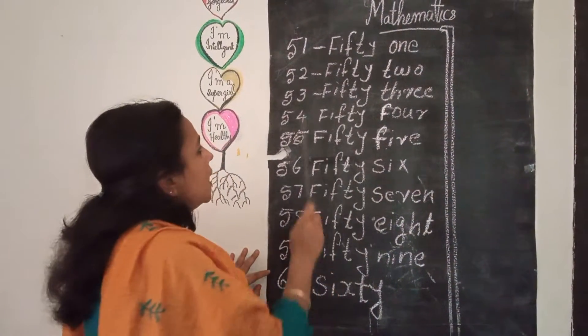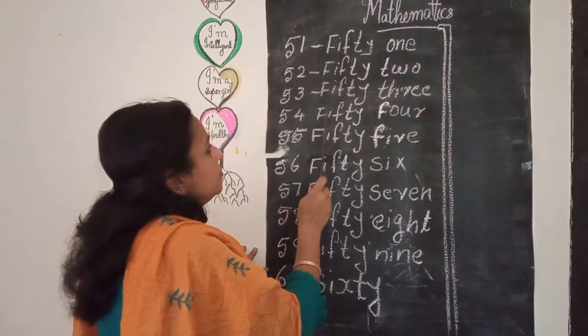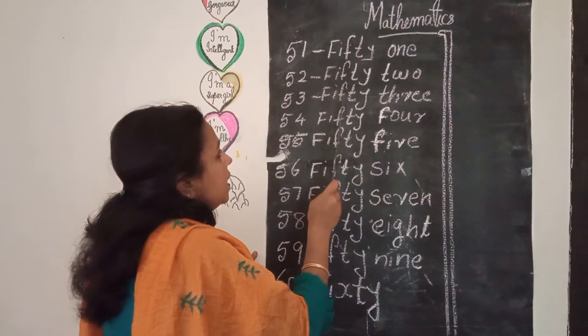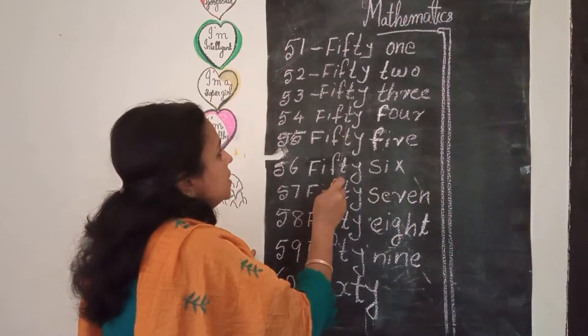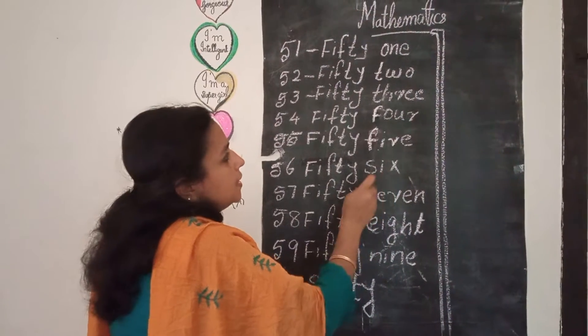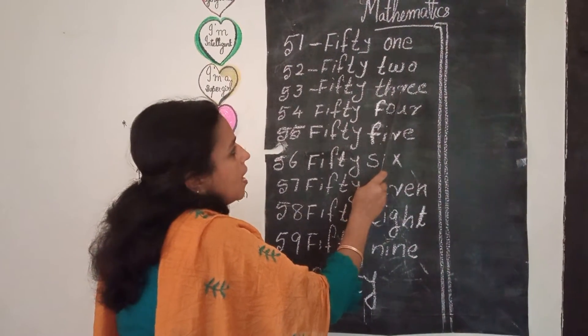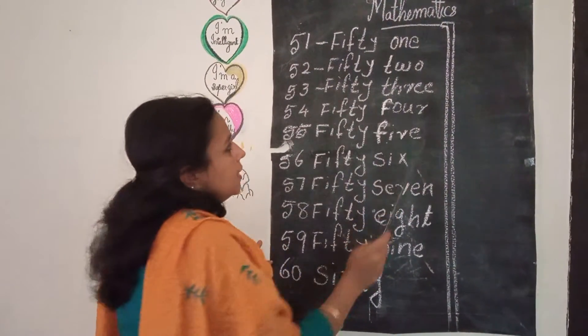53 — spelling: F, I, F, T, Y, T, H, R, E, E. Fifty-three.